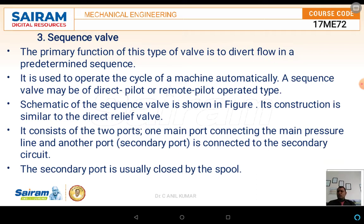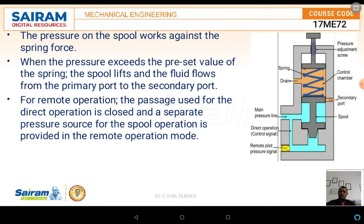The sequence valve consists of two ports: one is the main port connected to the main pressurizing line, and the other is a secondary port connected to the secondary circuit. The schematic diagram is similar to that of the unloading valve, but here the main pressure line and the secondary port are both present. The main pressurized line is the inlet and the secondary port is the outlet. The spool movement is caused by pressurization of the pneumatic air or oil through the main line.